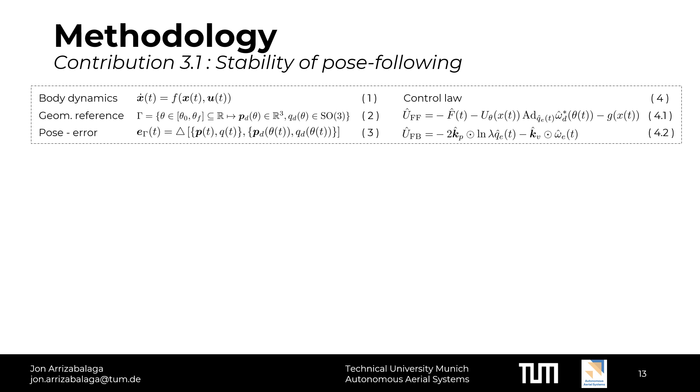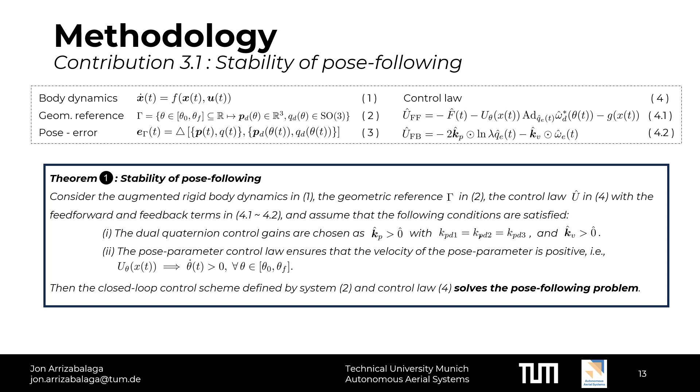The stability guarantees are given by two different theorems, each of them being associated to the two problems formulated earlier. For the sake of time, we will only state the theorems. If you are interested in the proofs, please check the paper. The theorem tackling the first problem says as follows: Consider the augmented rigid body dynamics in 1, the geometric reference in 2, the control law in 4, with the feedforward and feedback terms in 4.1 and 4.2, and assume that the following conditions are satisfied. First, the dual quaternion control gains are chosen to be positive and the dual components of kp equal to each other. Second, the pose-parameter control law ensures that the velocity of the pose-parameter is positive. Then, the closed-loop control scheme defined by system 2 and control law 4 solves the pose-following problem. That is the first theorem. Let's move on to the second one.